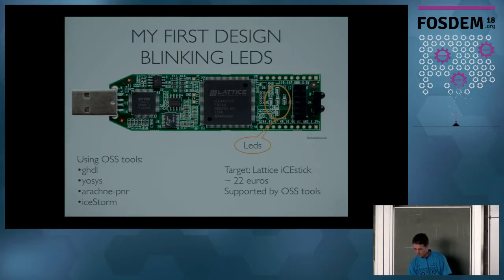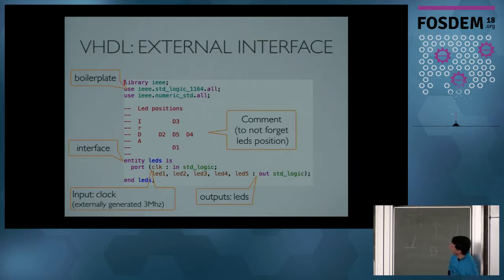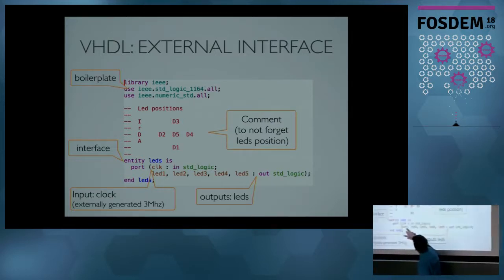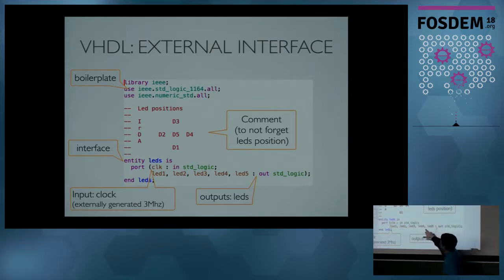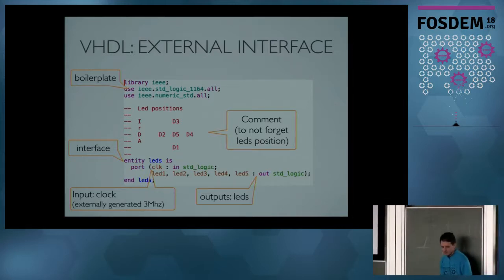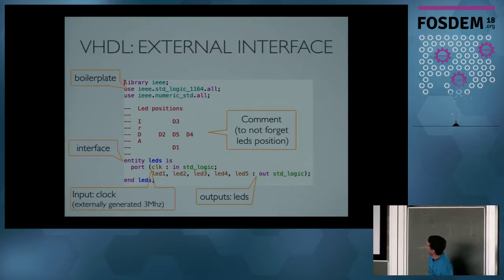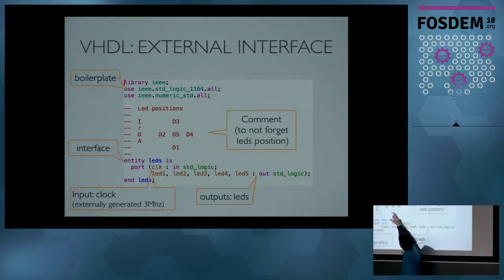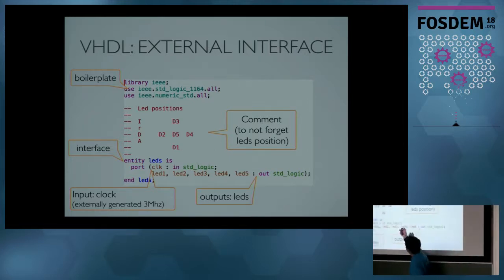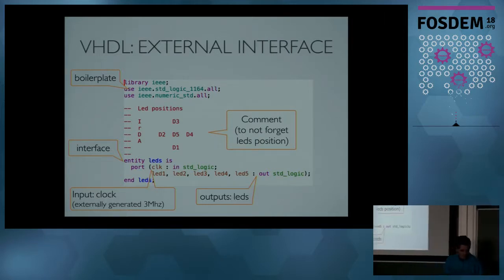So what does a VHDL file look like? In VHDL, the circuit is composed of two parts: entity and architecture. The entity defines the interfaces. This interface needs a clock, and there are five outputs which will correspond to the LEDs. If the output is set to one, the LED is on; if set to zero, the LED is off. There is a comment that describes how the LEDs are placed on the circuit — it is not obvious to know which wire corresponds to which LED.